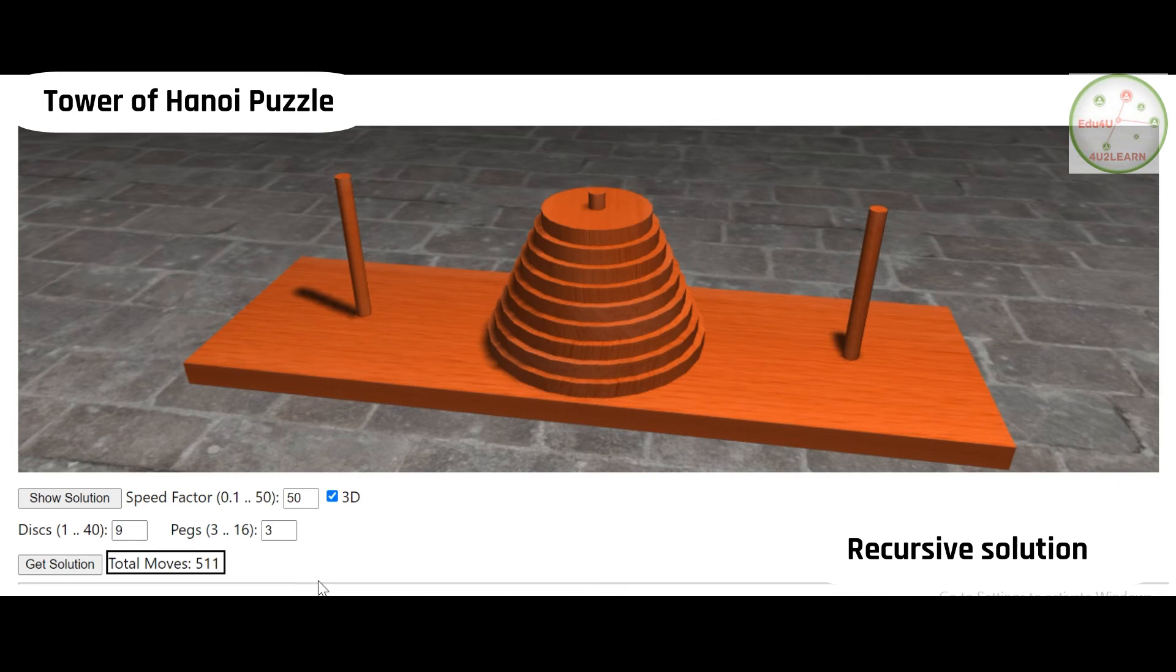This is why we normally estimate the time complexity by having the basic operation, that is how many times the basic operation is being repeated in order to get the solution. Based on the solution, how many moves or how many steps have taken place, we know the duration. From this particular demonstration of tower of Hanoi, hope you have understood.